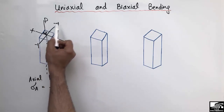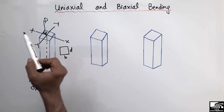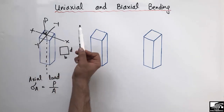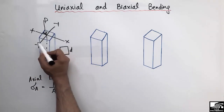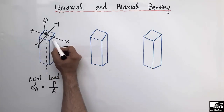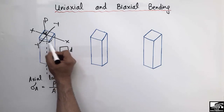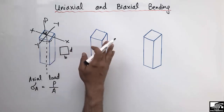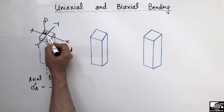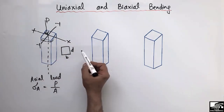This is the simplest case where the load is at the center of the column along both the x-axis and y-axis. In this case, the column will only be compressed and will not bend, because the load is acting only at the center of the column.